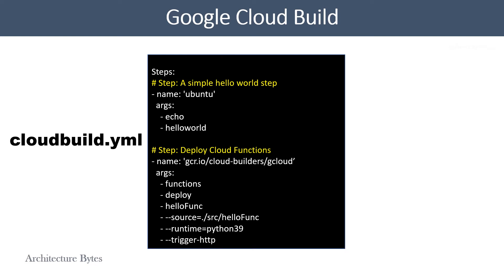Here is a simple Cloud Build config file. It can be a YAML or a JSON file, and it can be configured to do things like fetch dependencies, run tests, create artifacts, and deploy. It contains a series of build steps — every build step runs in a Docker container. Steps will run in series or concurrently based on dependencies defined.